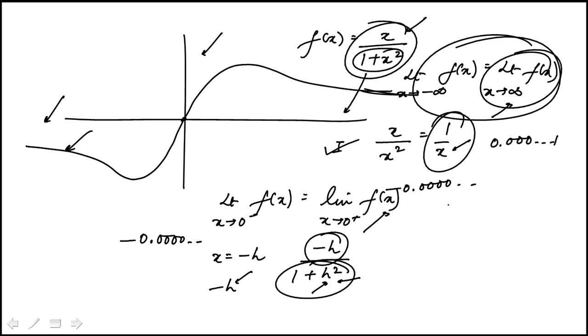Same thing on this side. If x is h, same thing. The denominator would just be 1. And then again, from this side also, you would be approaching 0. So both the right-hand limits and the left-hand limits are equal. So 2 also holds true.